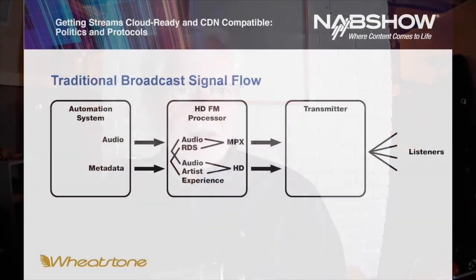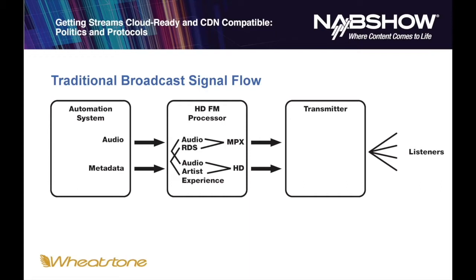We'll start off by showing the traditional broadcast signal flow. This is a very rough view, of course. We start with the audio input, which is usually an automation system. It can include microphones in the studio, incoming phone calls, things like that. If it's an automation system, then it's also the supplier of metadata — information about the songs being played: the titles, the bands, the albums, the ISRC numbers, things like that.